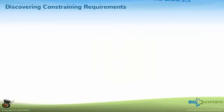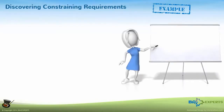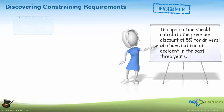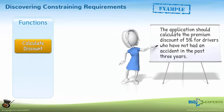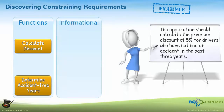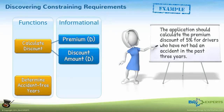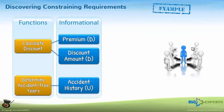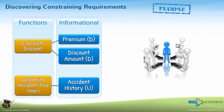Let's look at a concrete example of constraints. We referenced a requirement: the application should calculate the premium discount of 5% for drivers who have not had an accident in the past three years. Using techniques discussed previously, you identified several functional elements — namely calculate discount, determine accident-free years, etc. — and several data elements like premium, discount amount, accident history, and so on. Your next step is to identify any stakeholder that has authority to mandate how these functions work or what data the function creates.